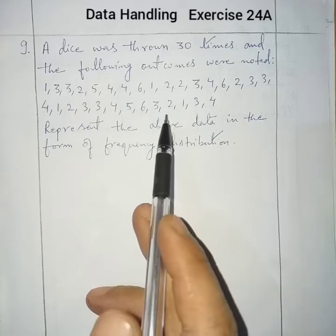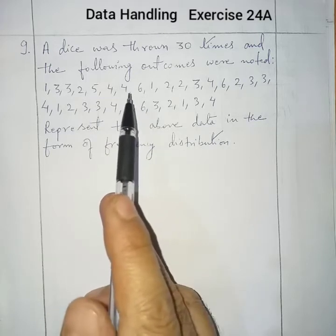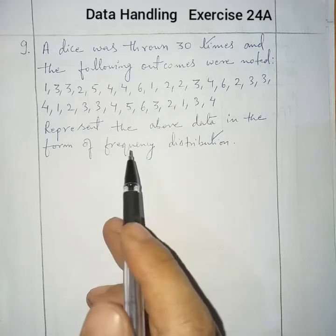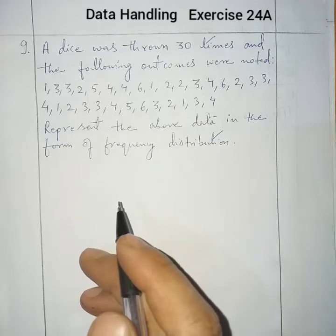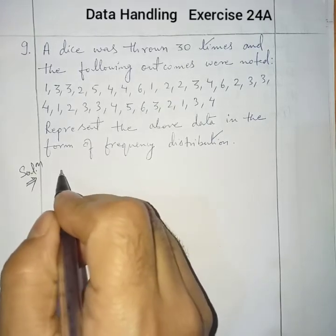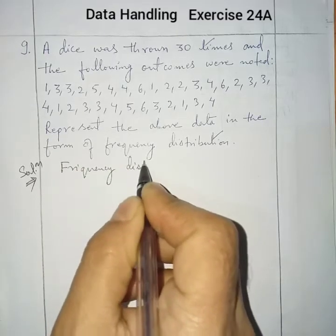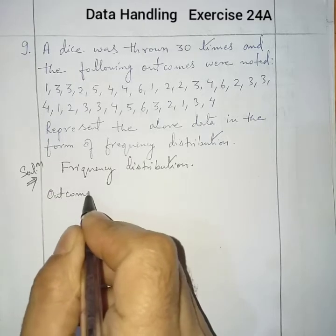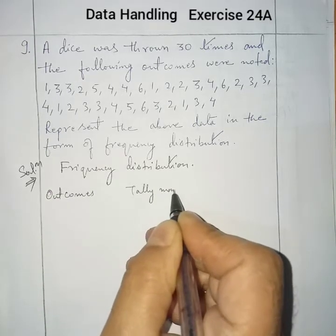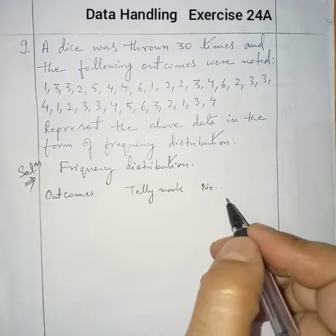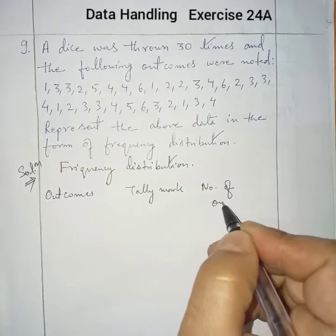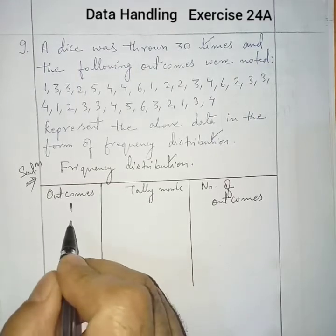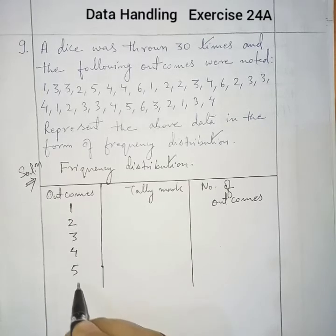So 30 outcomes were noted here, ranging from 1 to 6. In a dice there are 6 faces, so 6 numbers are there: 1, 2, 3, 4, 5, 6. Now we have to represent the above data in the form of a frequency distribution table. We'll make a table with headings: Outcomes, Tally Mark, and Number of Outcomes.